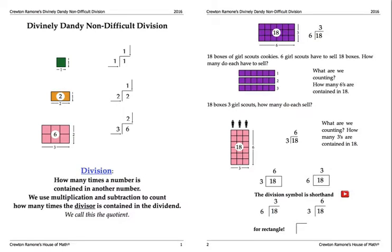Divinely Dandy Non-Difficult Division starts off very simply. Here we have just one and understanding the patterning for across and down, and then we move up very quickly to our old friend 18 and learn how to read this: six is contained in 18 three times.